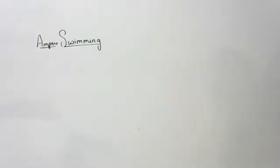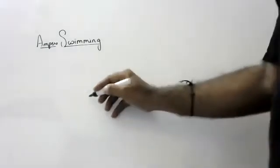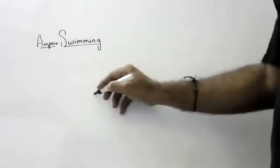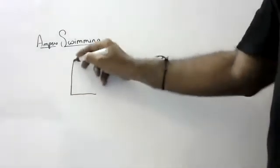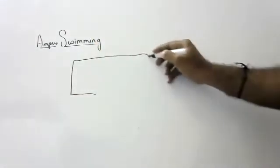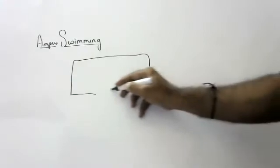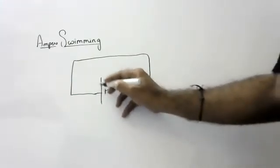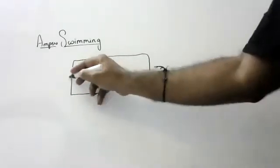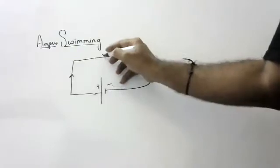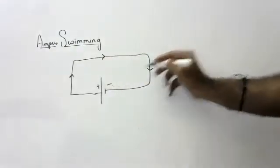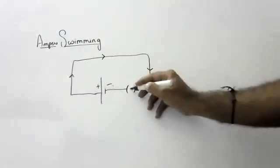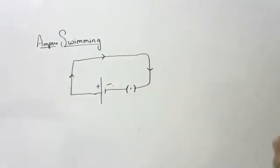From the very first class I was telling you that around the current-carrying area, the magnetic field is affected. Around the current-carrying area, when you connect the circuit and switch on, the current will flow.